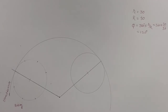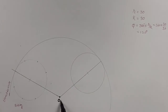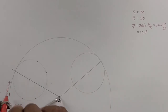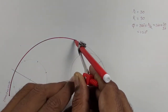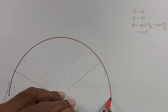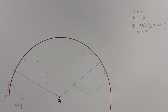First, we mark the center of the diating circle. Then we take the 90 mm radius and draw our diating circle. Then we mark the initial position of our diating circle.